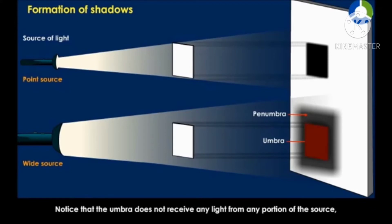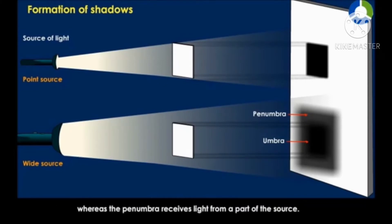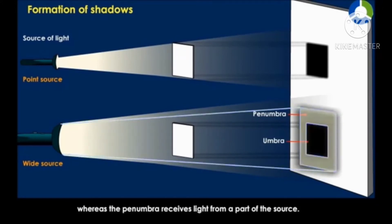Notice that the umbra does not receive any light from any portion of the source, whereas the penumbra receives light from a part of the source.